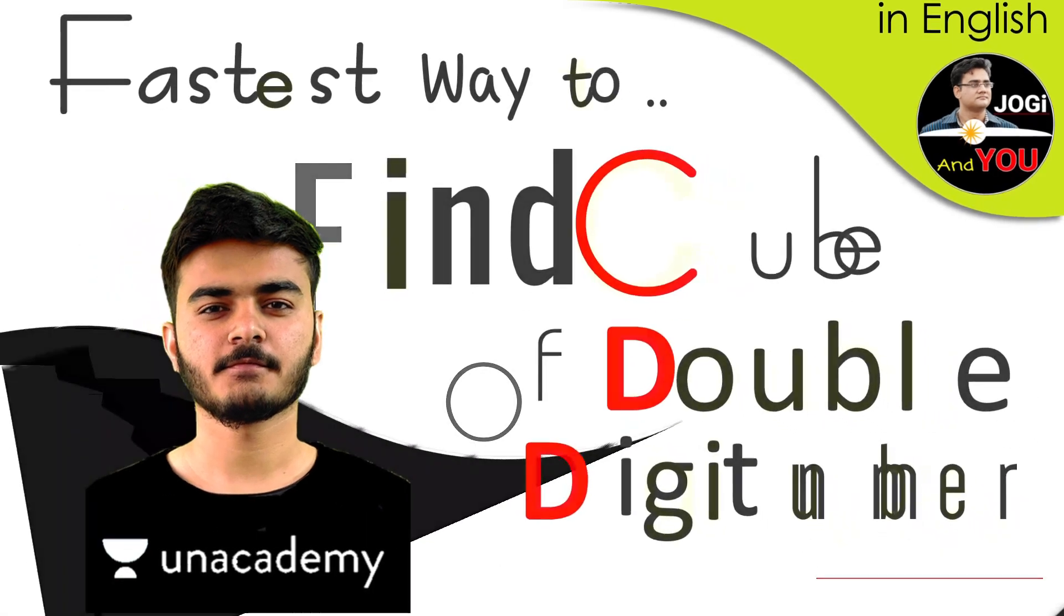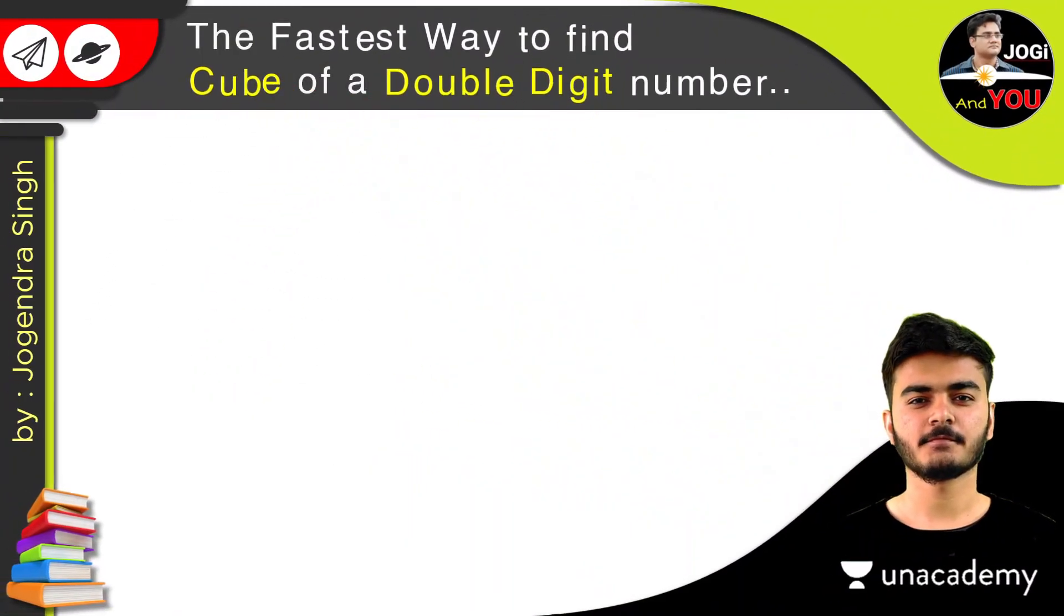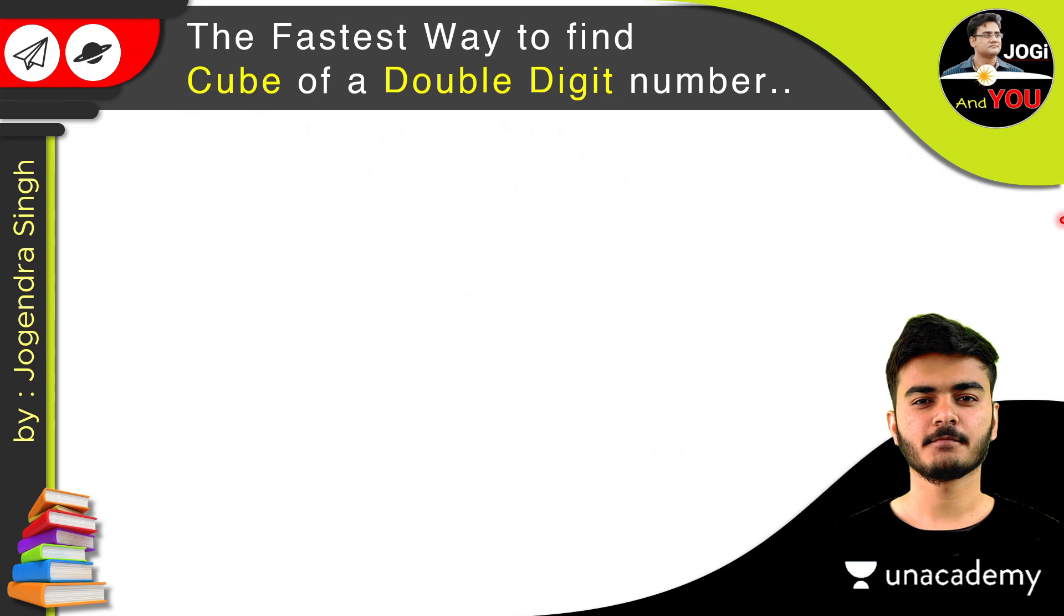So what we are going to learn today is the fastest way to find the cube of a double digit number. And for finding the cube of any double digit number, we have to multiply two numbers with each other and then multiply the result with the third number. I mean if we want to calculate the cube of 3, then we multiply 3 with 3 and multiply the result with 3 again.